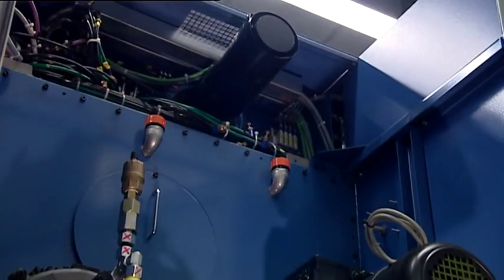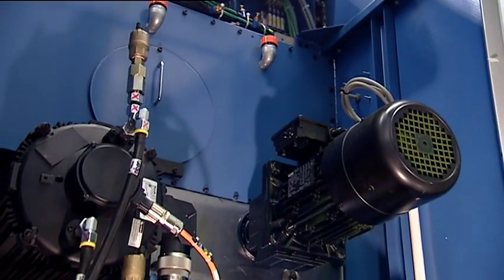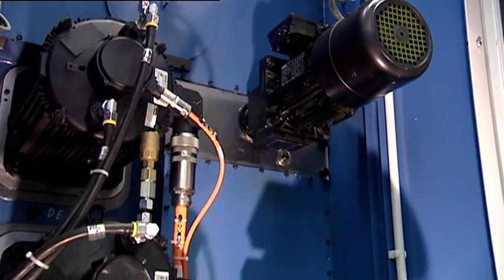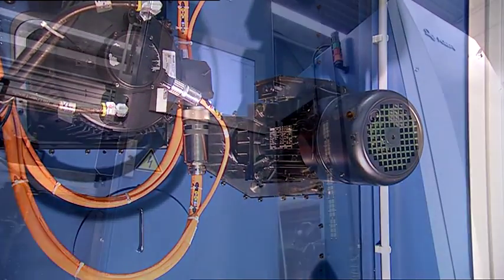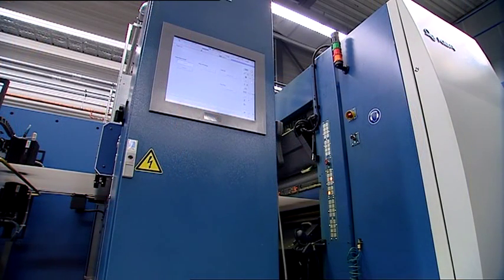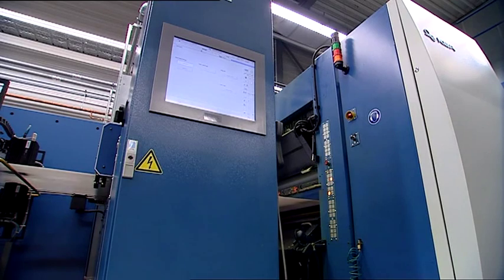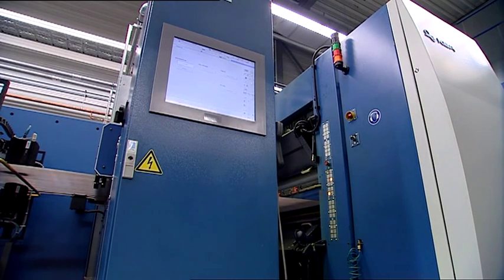Two drives per printing unit allow the circumferential register to be set quickly and precisely with no mechanical input. Braking and accelerating speeds are lower than with the single motor systems of other presses. This enhances reliability and reduces maintenance tasks.